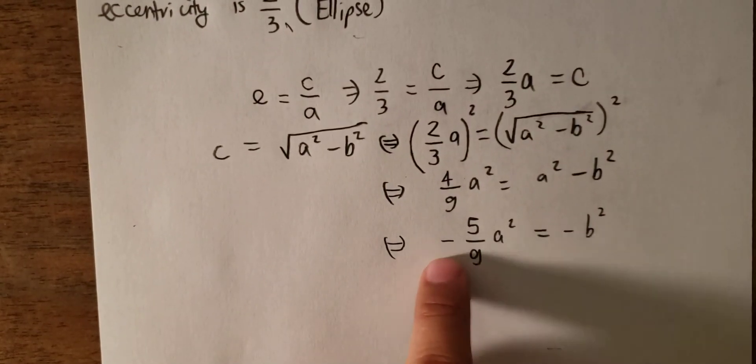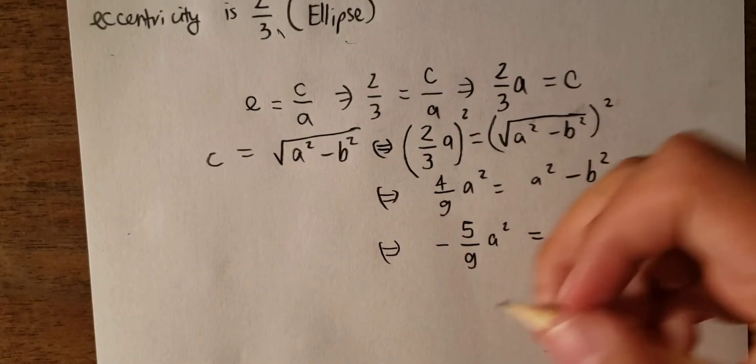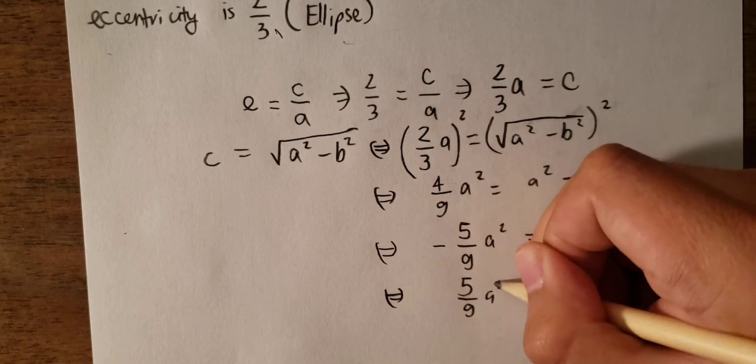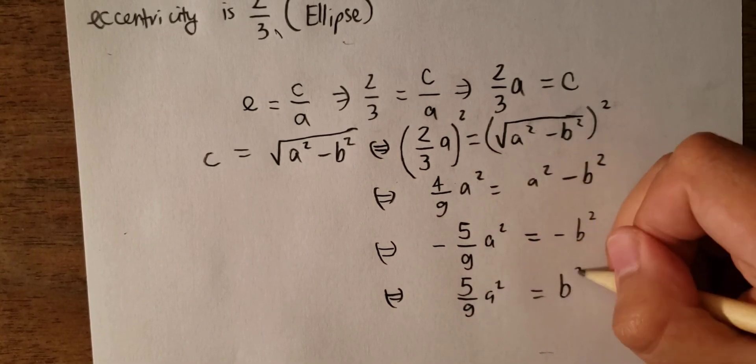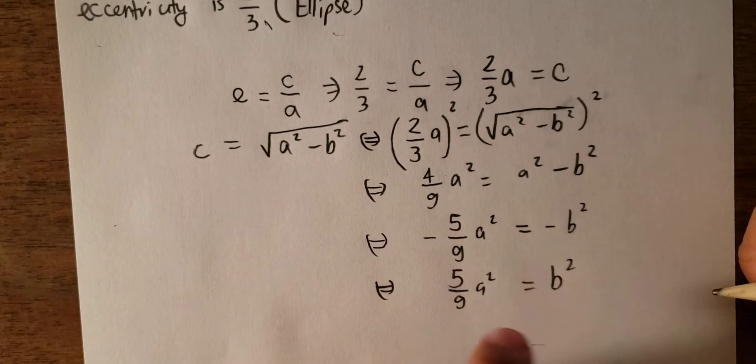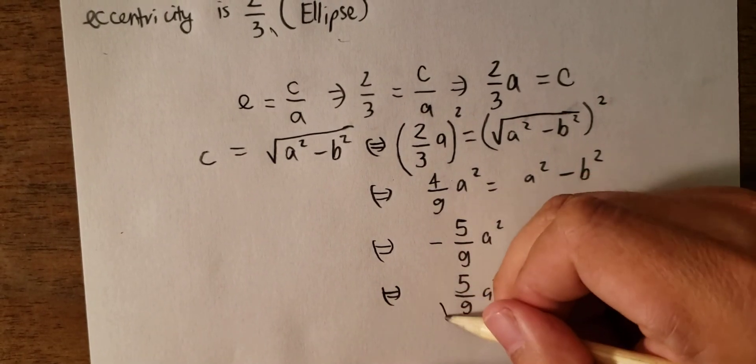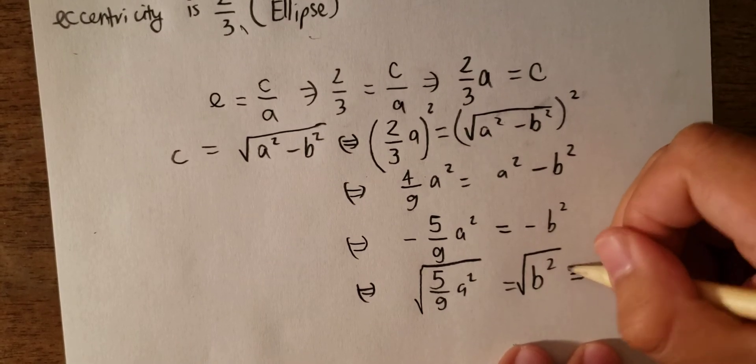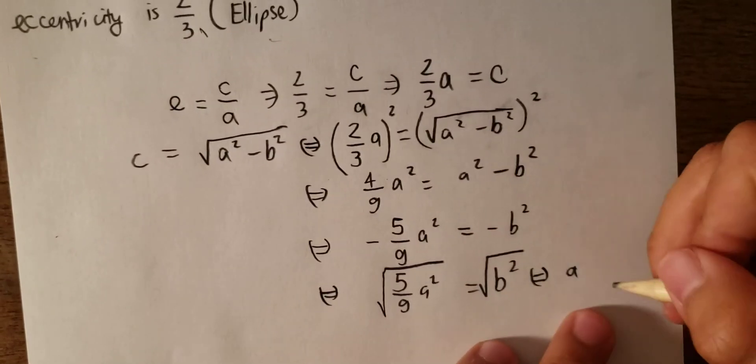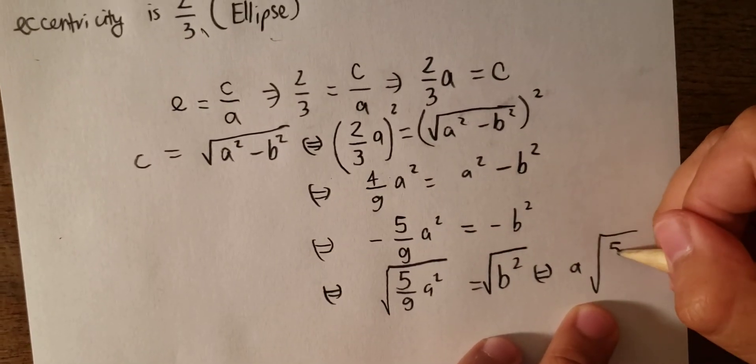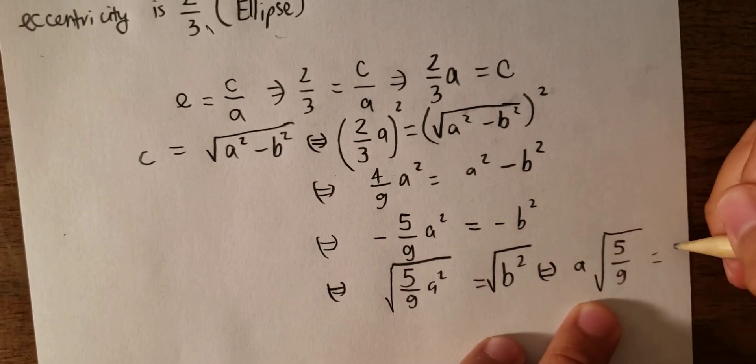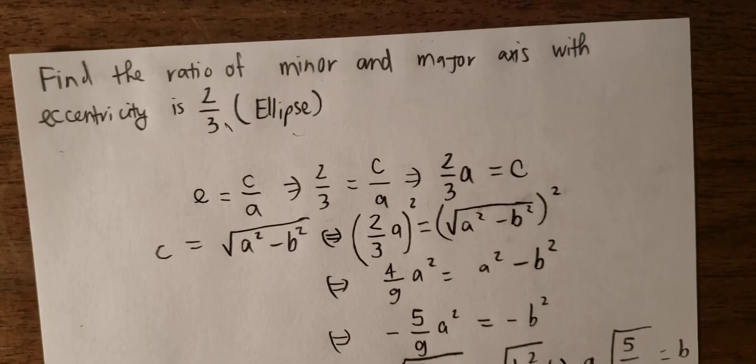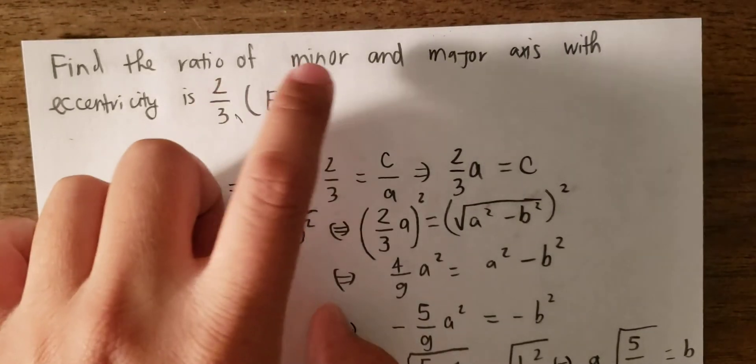So we eliminate the minus and then we put the square on both sides. And we get about a multiply with the square root 5 over 9 equal to b.